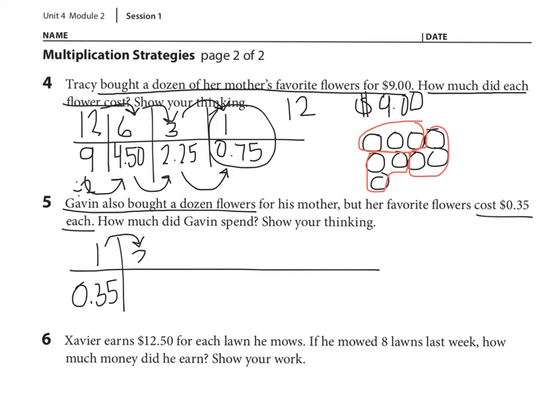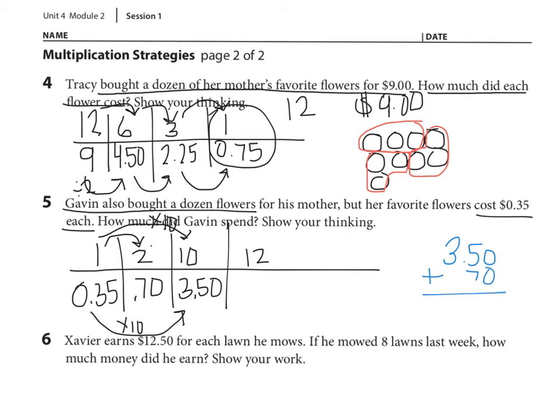So I can say double 2 is $0.70 because $0.35 doubled is $0.70. Next, I can find 10 groups, the cost of 10 flowers, by going from 1 to 10, which is multiplied by 10. Going from $0.35 times 10, which would be $3.50. Now can I find the cost of 12? Yes. I'm going to think 2 plus 10 is 12. So I'm going to add the cost of 2 of them plus the cost of 10 of them. So I'm thinking $3.50 plus $0.70. So again, what am I thinking? I'm thinking $3.50 plus $0.70 equals $4.20. So there's the answer. 12 costs $4.20.